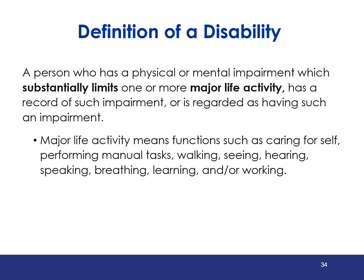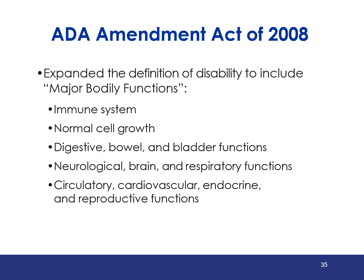This includes the USDA's child nutrition programs since funding is received for meals, milk, snacks, and commodities. The ADA Amendment Act of 2008 expanded the definition of disability to include major bodily functions, which includes immune system, normal cell growth, digestive, bowel, and bladder functions, neurological, brain, and respiratory functions, circulatory, cardiovascular, endocrine, and reproductive functions. So what does this mean for child nutrition program operators? More participants may be included within the expanded disability definition, and more meal accommodations may result.